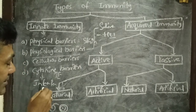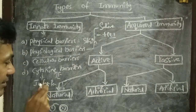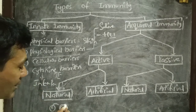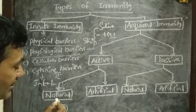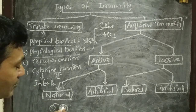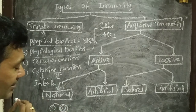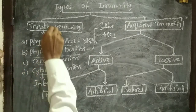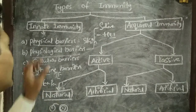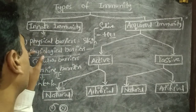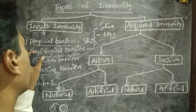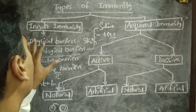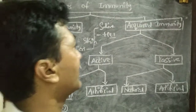An infected cell produces interferon, a protein which acts as a coat upon neighboring cells so that they won't get further infection. This is also one component of innate immunity. To summarize, innate immunity includes physical barriers, physiological barriers (secretions), cellular barriers, and cytokine barriers.